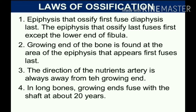The epiphysis that ossifies first fuses with the diaphysis last. The epiphysis that ossifies last fuses first, except the lower end of the fibula. The growing end of the bone is found at the area of the epiphysis that appears first and fuses last. The direction of the nutrient artery is always away from the growing end. In long bones, the growing end fuses with the shaft at about 20 years.